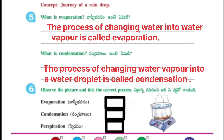Next concept: Journey of a Rain Drop. What is Evaporation? The process of changing water into water vapor is called Evaporation. What is Condensation? The process of changing water vapor into a water droplet is called Condensation. Observe the picture and pick the correct process — this picture indicates Evaporation.